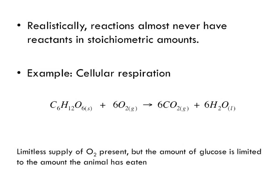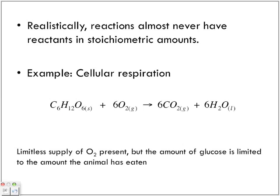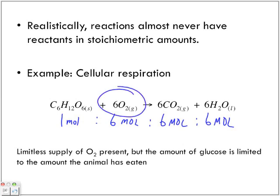For example, in cellular respiration, one molecule of glucose combines with six molecules of oxygen to produce six molecules of carbon dioxide and six molecules of water. In mole ratio terms: one mole of glucose to six moles of oxygen to six moles of carbon dioxide to six moles of water. But realistically, oxygen is constantly present — a limitless supply — while the amount of glucose is limited to what the animal has eaten. So this reaction is limited to how much glucose you have in your body.